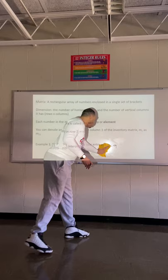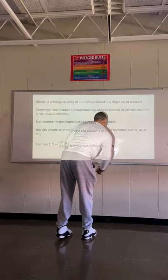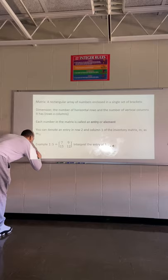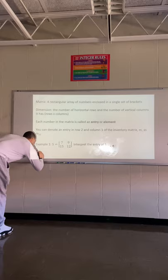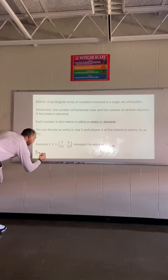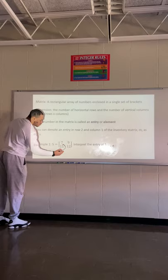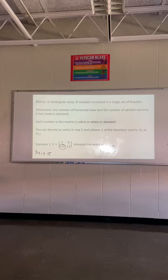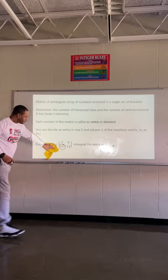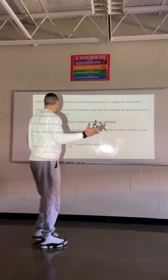Let's say they wanted us to figure out what S₂₁ is. If I was trying to find S₂₁, I would look for my second row — this is our first row, this is our second row — then first column. Second row, first column: S₂₁ is equal to 15. Those are fairly easy if you understand rows and columns.